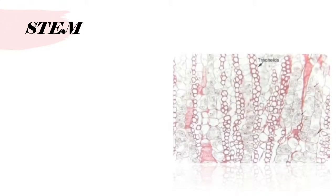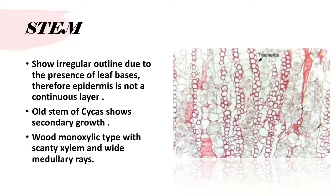Anatomy of stem, as observed in the diagram: the stem shows an irregular outline due to the presence of leaf bases. The epidermis is therefore not a continuous layer. Old stems of Cycas show secondary growth. The wood is of the manoxylic type, with scanty xylem and wide medullary rays.